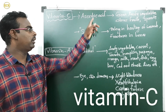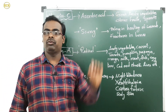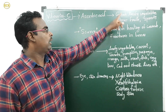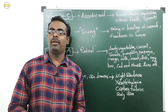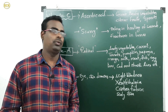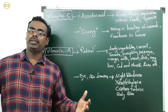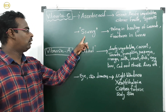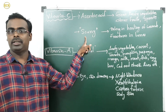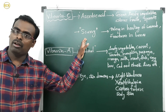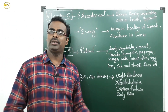The second water-soluble vitamin is vitamin C, with scientific name ascorbic acid. Vitamin C is available in green leafy vegetables, citrus fruits (like lemons and oranges), and sprouted seeds. Deficiency of vitamin C causes scurvy disease, with symptoms including delayed healing of wounds and fractures in bones.